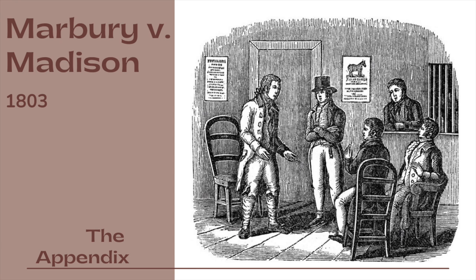If it had been intended to leave it in the discretion of the legislature to apportion the judicial powers between the Supreme and inferior courts according to the will of that body, it would certainly have been useless to have proceeded further than to have defined the judicial power and the tribunals in which it should be vested. The subsequent part of the section is mere surplusage, entirely without meaning, if Congress remains at liberty to give this court appellate jurisdiction where the Constitution has declared its jurisdiction shall be original.